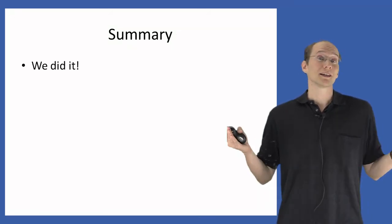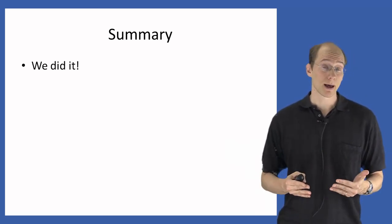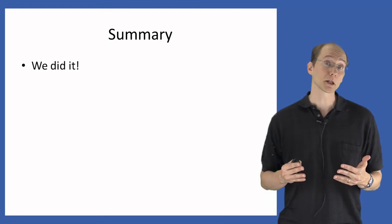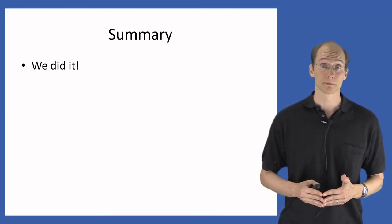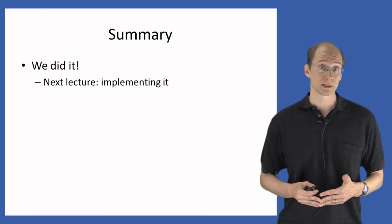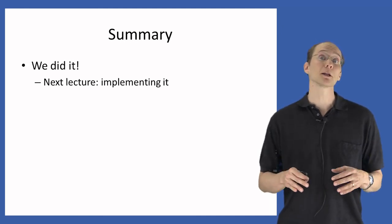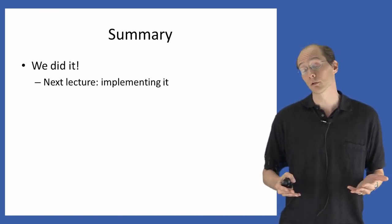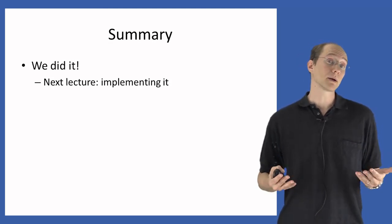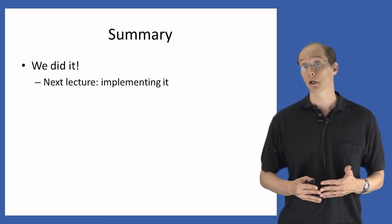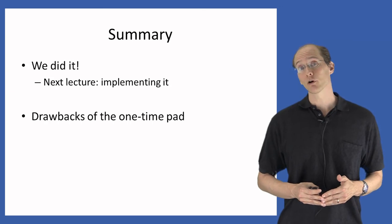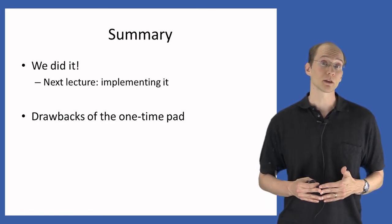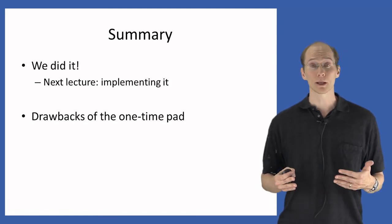To summarize: we came up with the definition of perfect secrecy, formalized it mathematically, showed a particular encryption scheme — the one-time pad — and proved that it satisfies our definition. In the next lecture, we'll talk about implementing the one-time pad; it's interesting to explore implementation-level details when coding it up, and it gives an alternate way of understanding the scheme. The one-time pad does have drawbacks we'd like to address, and after discussing implementation we'll revisit those drawbacks and explore to what extent we can avoid them.